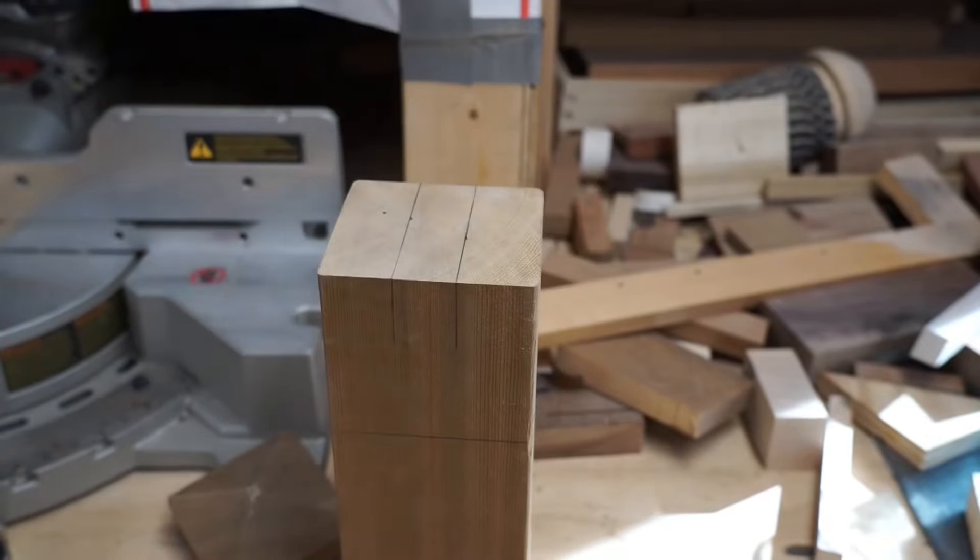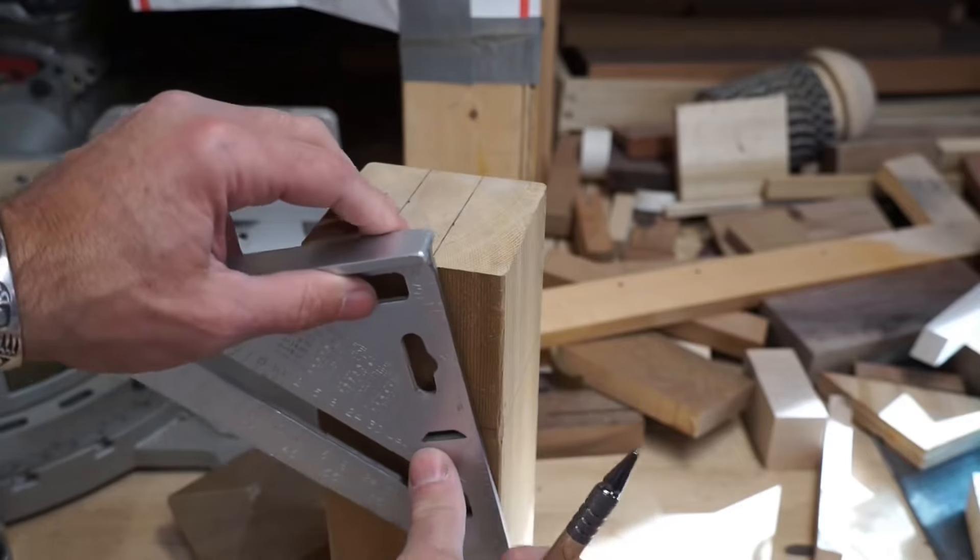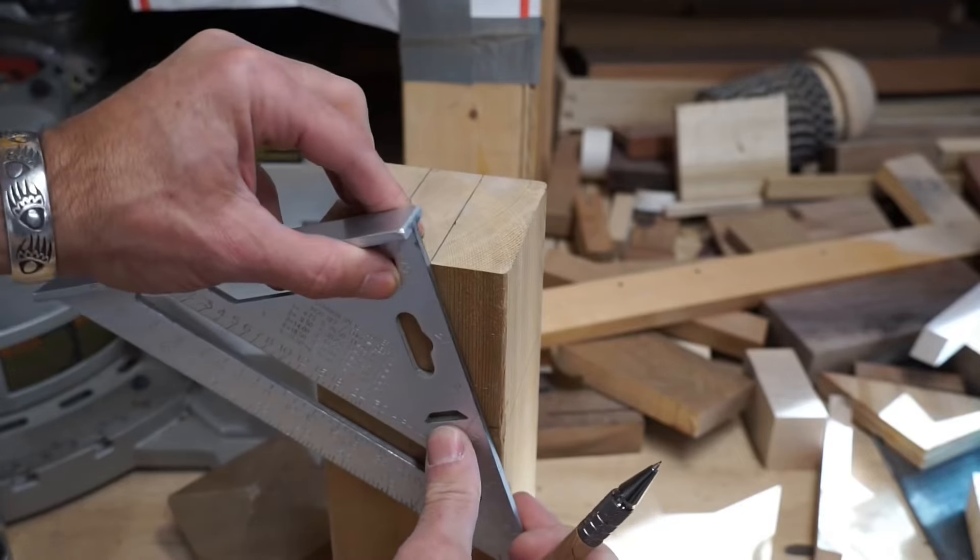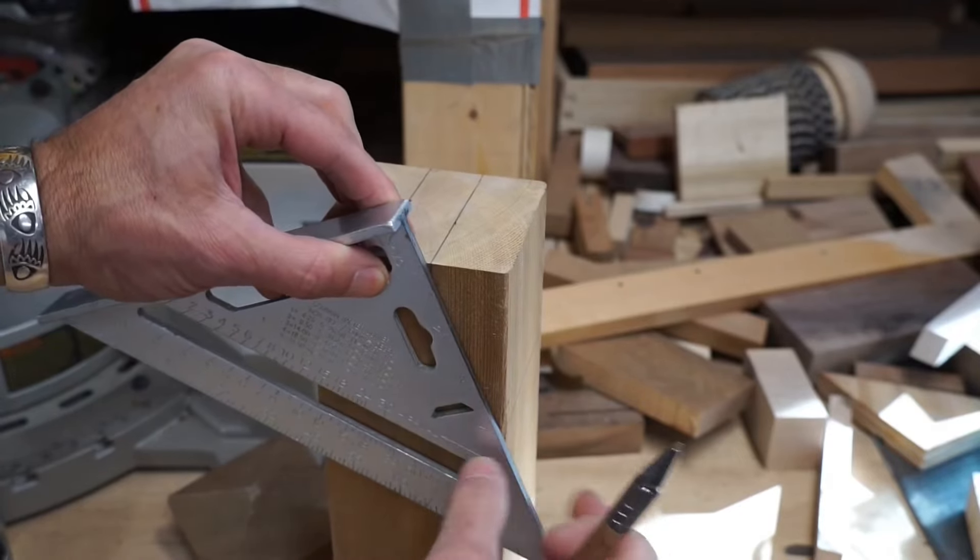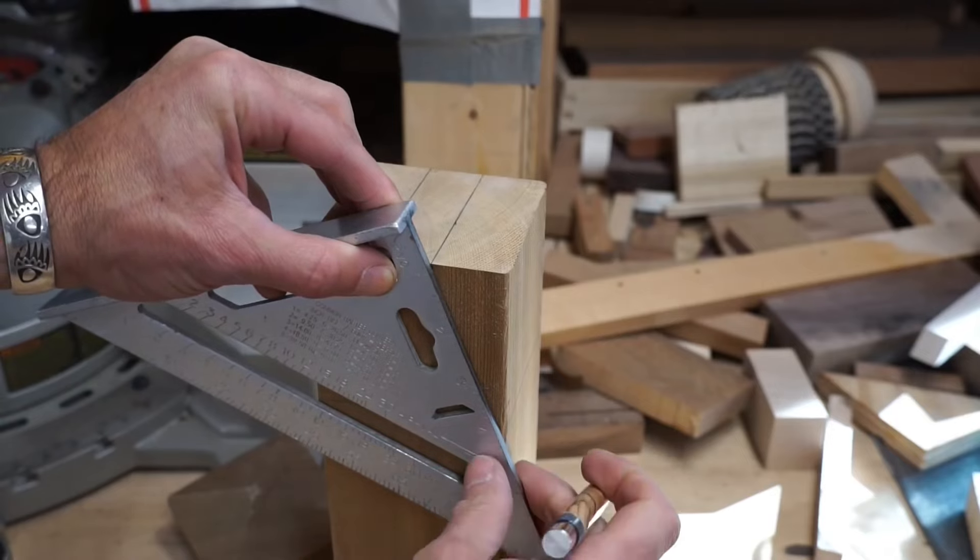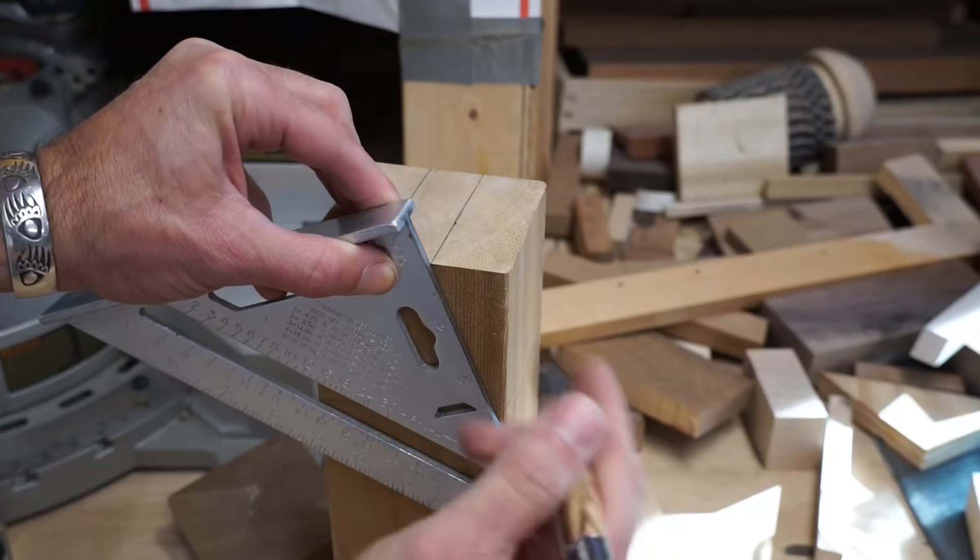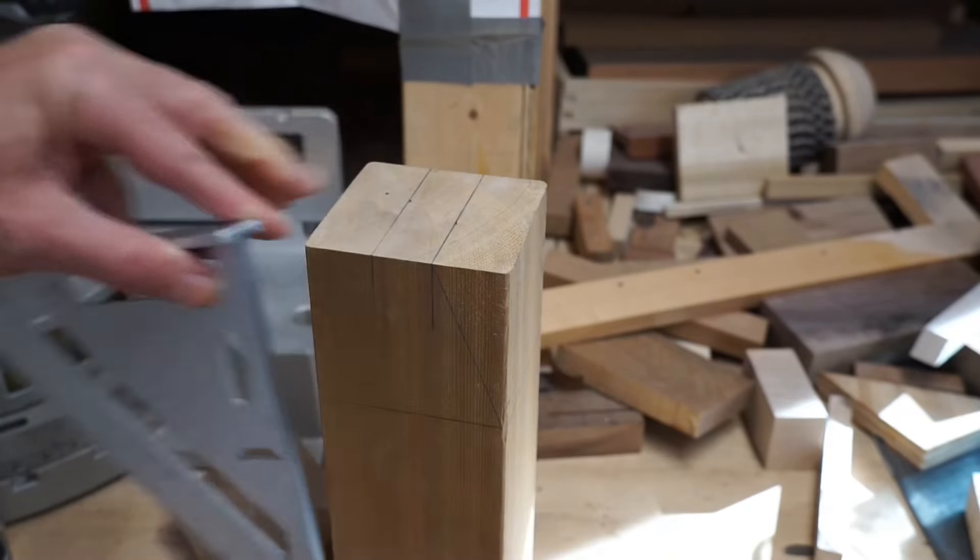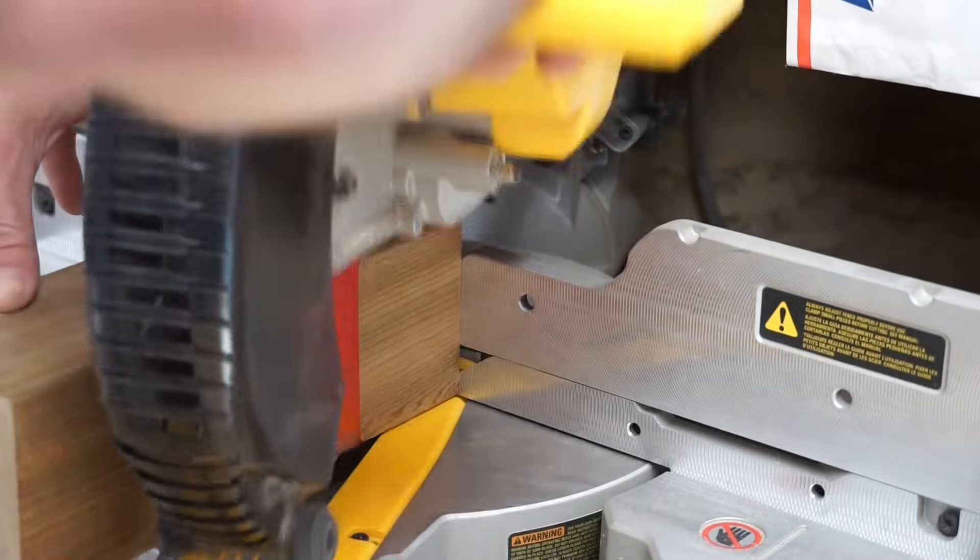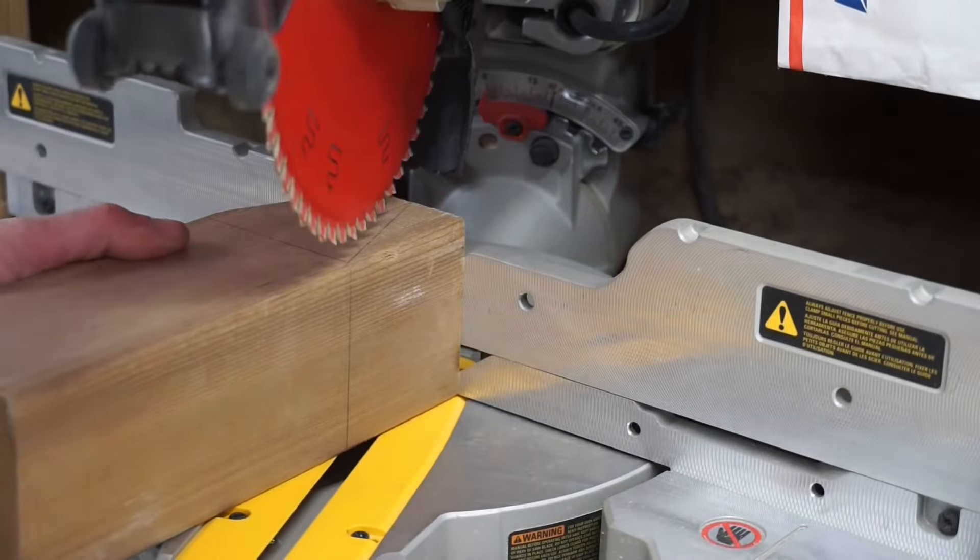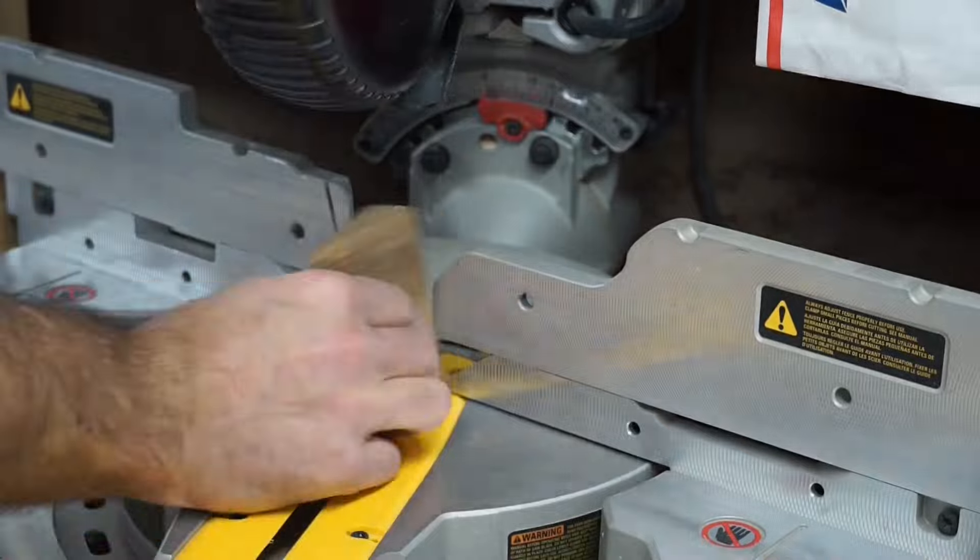You'll now want to make a line from that rectangle you just drew up top, down to the line that you drew 3 inches down from the top a little bit earlier. This is going to create the angle of the top of the buoy. Now you're just going to want to make a cut along that line you just made.